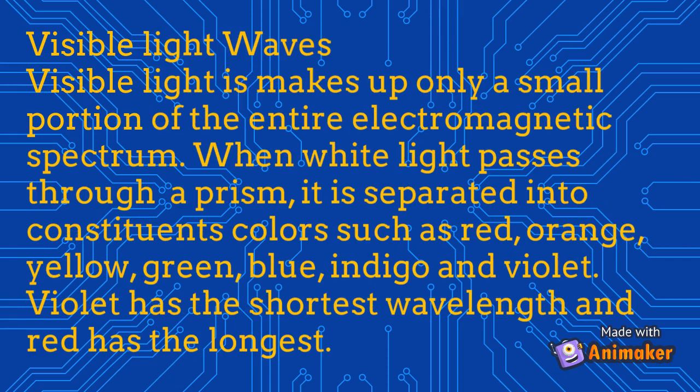Visible light makes up only a small portion of the entire electromagnetic spectrum. When white light passes through a prism, it is separated into its constituent colors: red, orange, yellow, green, blue, indigo, and violet. Violet has the shortest wavelength and red has the longest.